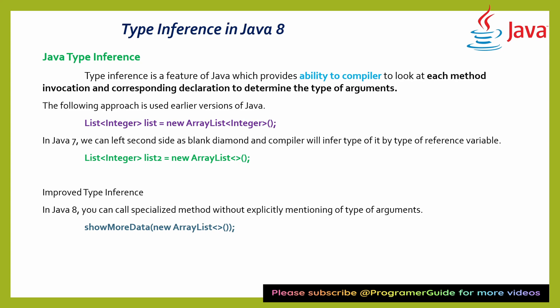Type inference is a feature of Java which provides the ability to the compiler to look at each method invocation and the corresponding declaration to determine the type of arguments. That means before Java 7 you were writing something like 'List<Integer> = new ArrayList<Integer>()', explicitly specifying the type — whether integer, employee, student, etc.